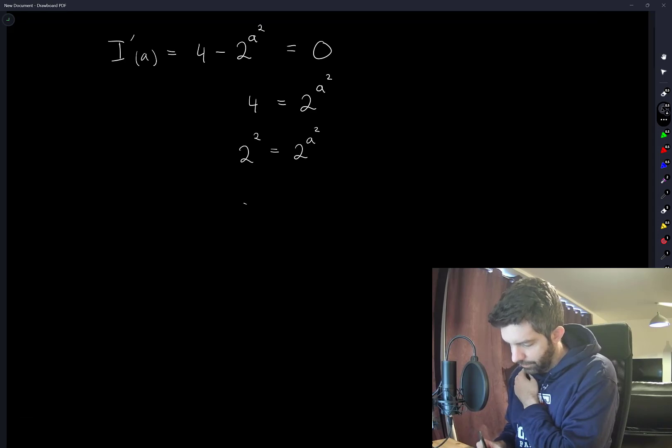So this tells us that a squared has to be equal to 2. And so a is equal to the square root of 2.